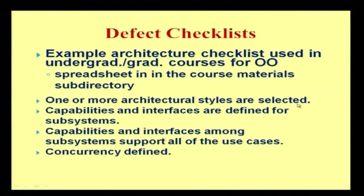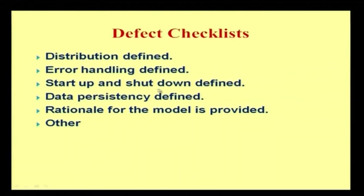Architecture checklist items include: one or more architectural styles selected; capabilities and interfaces determined for subsystems; capabilities and interfaces among subsystems support all use cases; concurrency clearly defined; distribution defined; error handling defined; start-up and shut-down clearly defined; data persistence clearly defined; rationale for the model provided. These are the different formats of the checklist for finding defects.